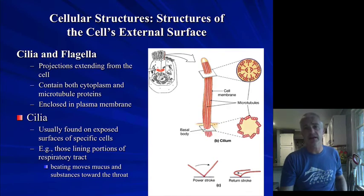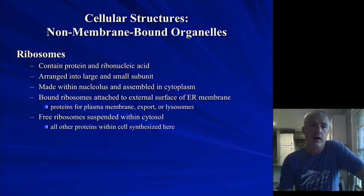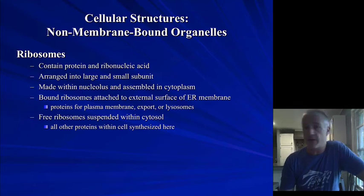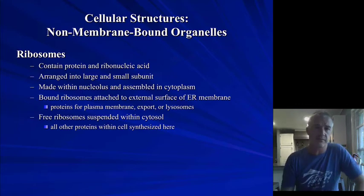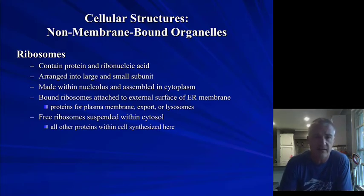Flagella is really the only structure we see on sperm cells. One of the last non-membranous organelles we're going to talk about is the ribosome. Ribosomes are made up of both protein and ribonucleic acid.